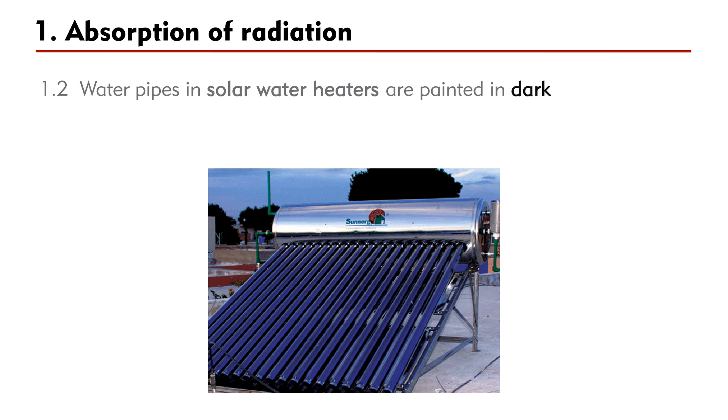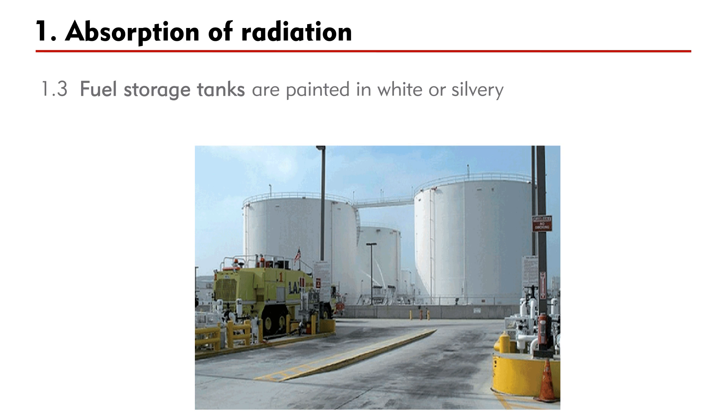Secondly, the water pipes in solar water heaters are painted in dark to enhance absorption of radiation. Thirdly, fuel storage tanks are painted in white or silvery to make them a poor absorber of radiation.